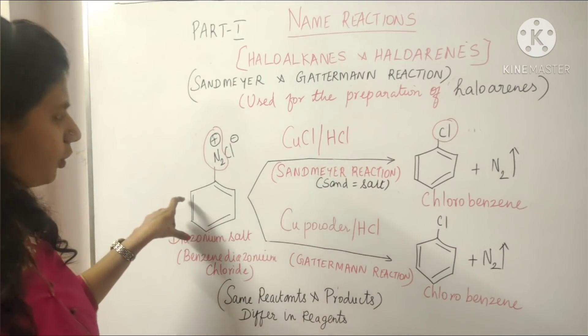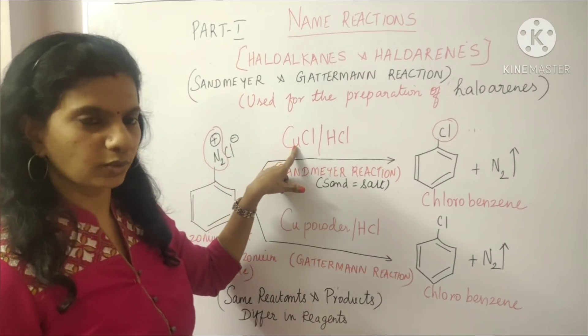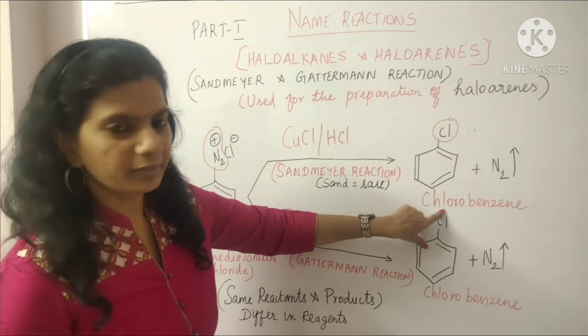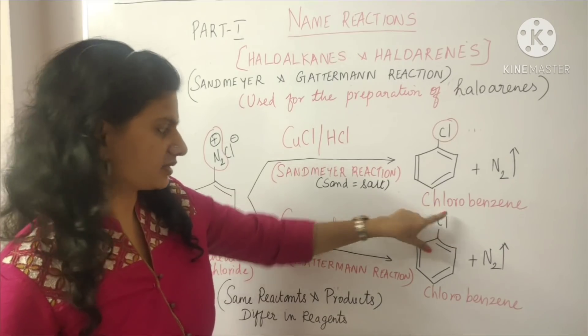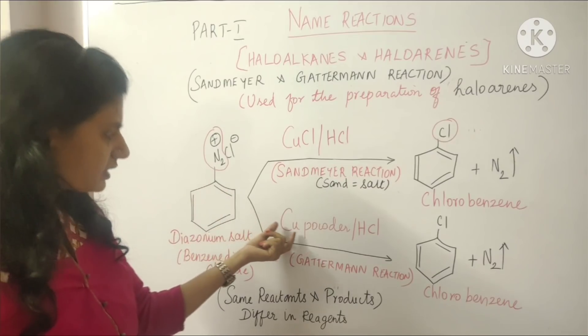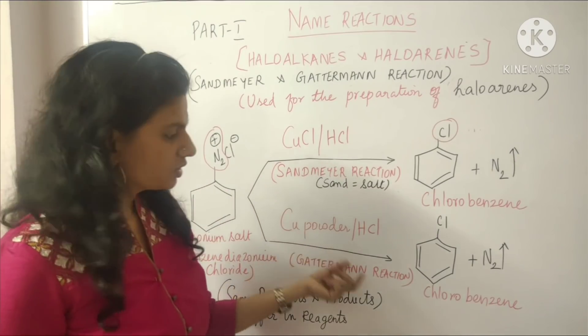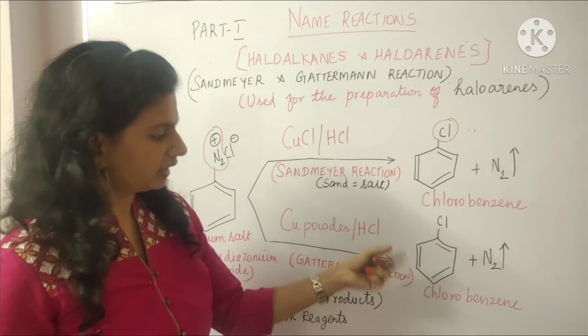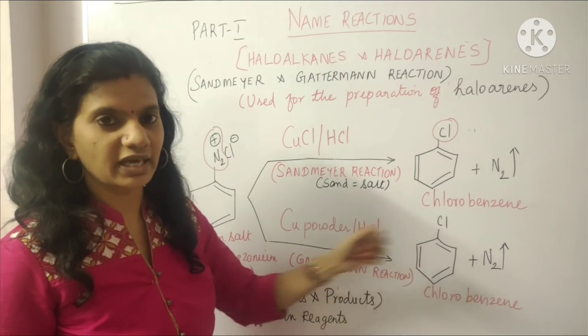Diazonium chloride in presence of cuprous chloride, we are getting chlorobenzene, that means haloarenes. In this case of Gattermann reaction, in the presence of copper powder, we are getting this chlorobenzene and we can synthesize the chlorobenzene, that is haloarenes.